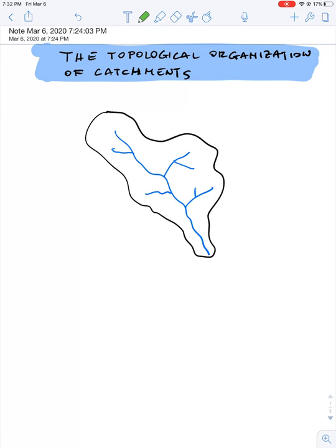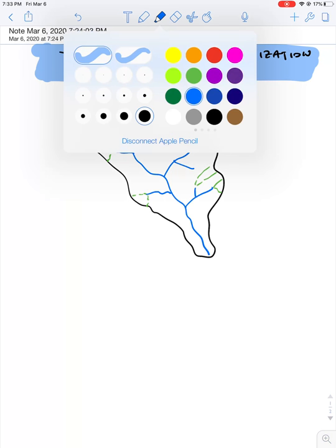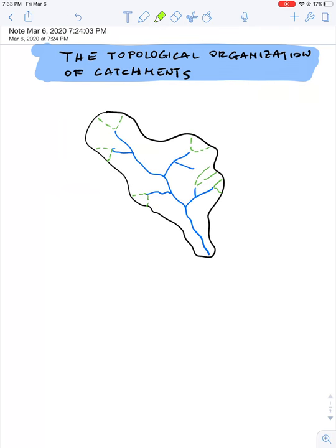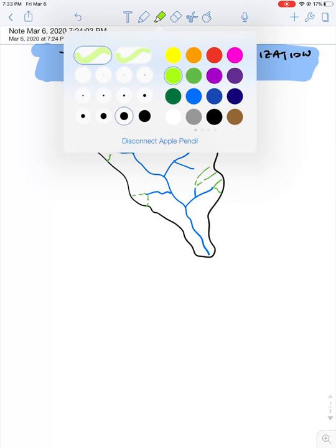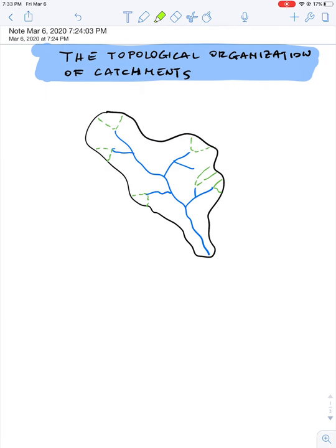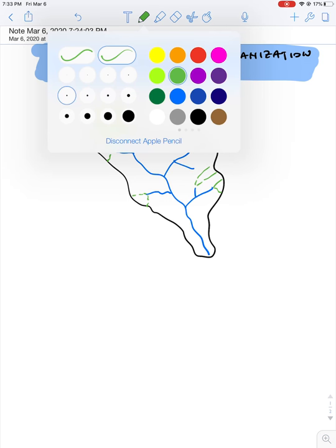We can identify some headwaters like this one, this one, and so on. To be better defined it should be, for instance, like this one. This area here is a headwater catchment. We can also identify some other subcatchments.